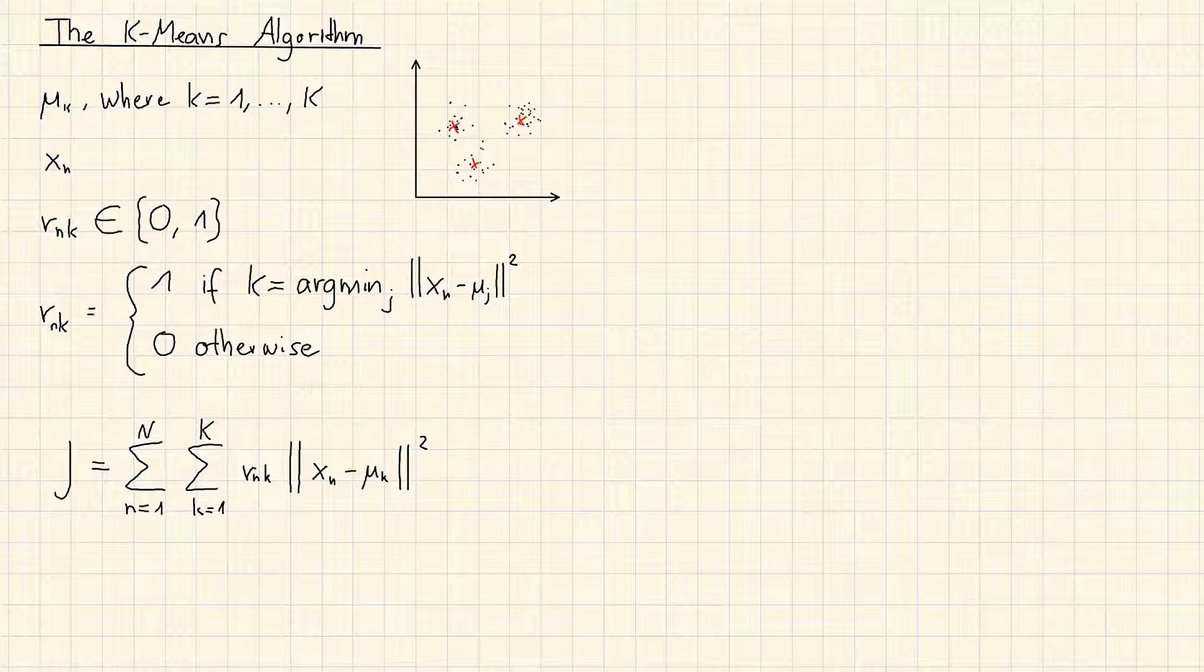We set rnk to 1. If the statement is not true, we set rnk equal to 0.